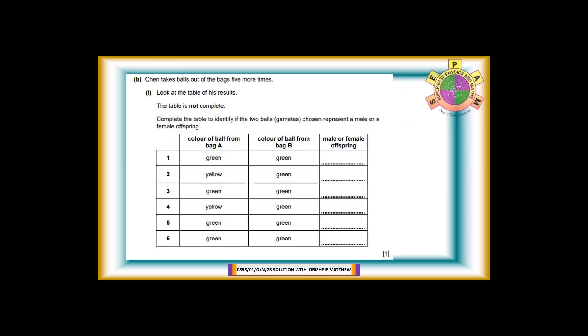8b-1: Chun takes balls out of the bags five more times. Look at the table of his results. The table is not complete. Complete the table to identify if the two balls, gametes, chosen represent a male or a female offspring. For one mark. Answer: Number 1: Green from bag A plus green from bag B produces a female offspring. Number 2: Yellow from bag A plus green from bag B produces a male offspring.